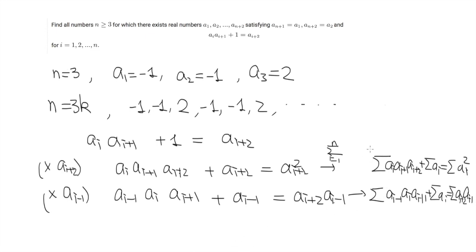If you look at the left-hand side of these two equations, indeed they are just permutations of each other. This means we have the sum of a_i squared equals sum of a_{i+2} a_{i-1}. And this simply means that a_{i+2} equals a_{i-1} for any i.